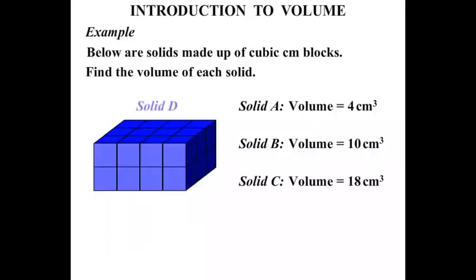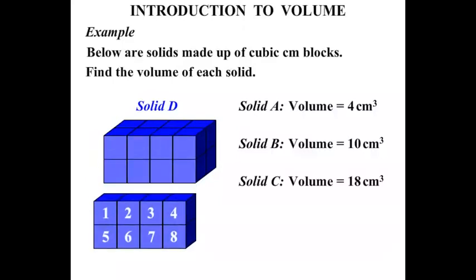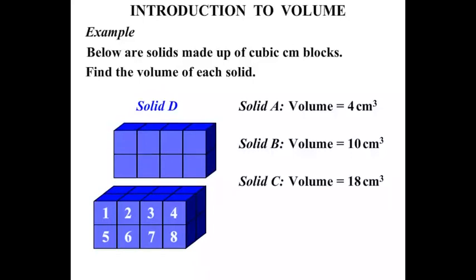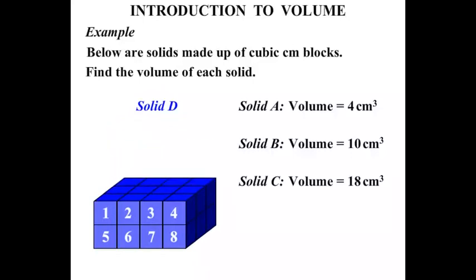The next one, solid D. 1, 2, 3, 4, 5, 6, 7, 8. The front has 8 cm³ there. Now if we move that down, we can see the next layer, and then another layer. So we've got 3 lots of 8, and 3 8s are 24. So solid D has a volume equal to 24 cm³.